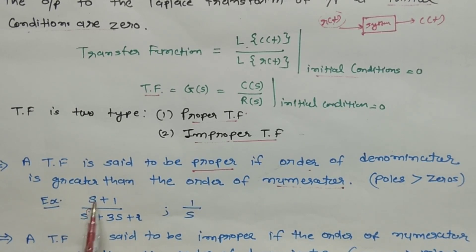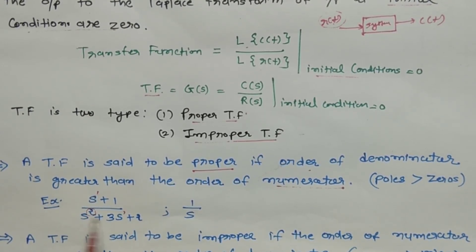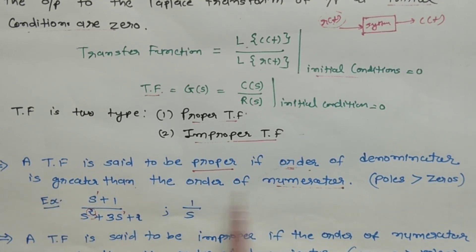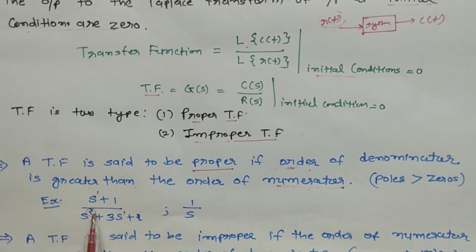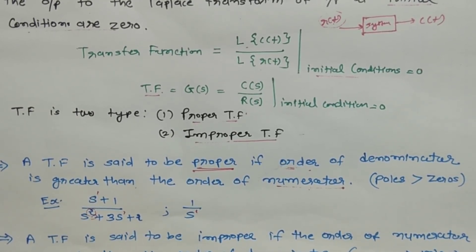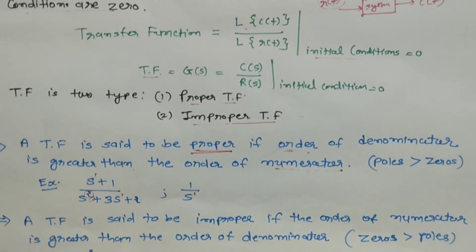In the numerator, the highest order of s is 1, and in the denominator the highest order of s is 2. Since the order of the denominator is greater than the order of the numerator, this is a proper transfer function. Another example is 1/s, where the denominator order is 1 and the numerator order is 0.